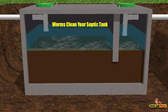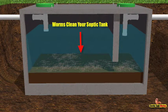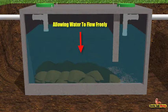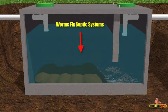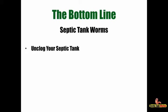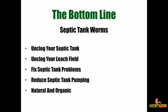While the worms are at work in your drain field pipes, they're also at work in your septic tank, eating that sludge and completely cleaning it out — once again allowing wastewater to flow freely from your property into the tank and into the drain field. The bottom line is that septic tank worms unclog your septic tank, unclog your leach field, fix septic tank problems, reduce septic tank pumping frequency, and they're natural, organic, and will save you thousands of dollars on repair costs.